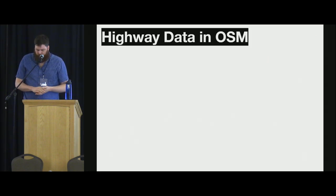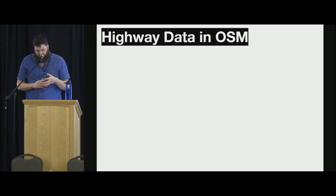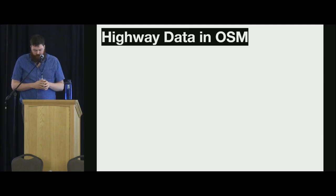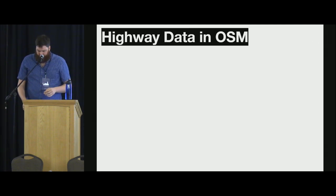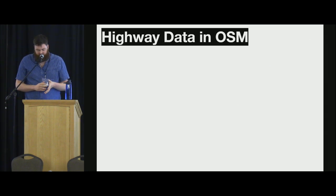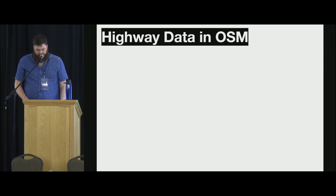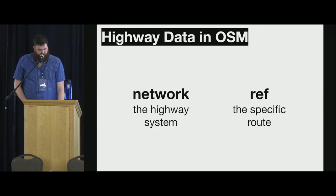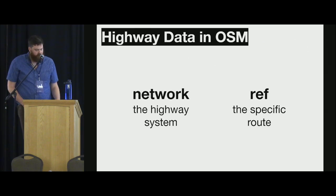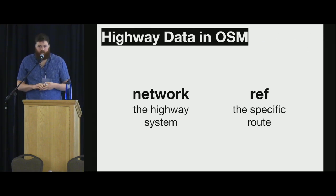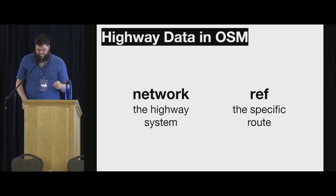A highway route in the real world and in OSM is typically made of several stretches of individual roads. The relevant network data is typically stored as a relation for multiple way features. In order for us to show the shields for motorway features, we need two specific attributes: the network attribute, which shows the highway system, and the ref attribute, which is the specific route.